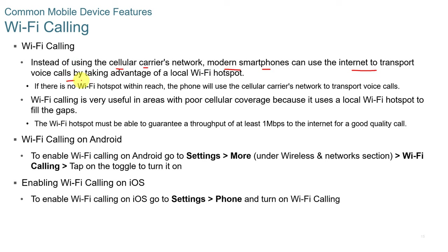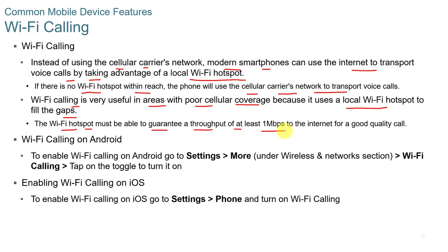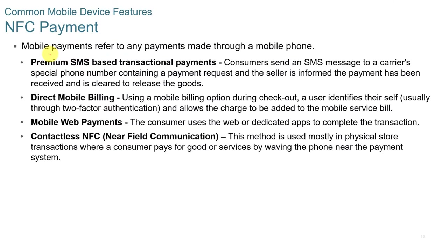Instead of using the cell carrier's network, modern smartphones can use the internet to transport voice calls by taking advantage of local Wi-Fi hotspots — this is called Wi-Fi calling. If there's no Wi-Fi hotspot within reach, the phone will use the cell carrier's network. Wi-Fi calling is useful in areas with poor cell coverage, and the Wi-Fi hotspot must be able to guarantee a throughput of at least one megabyte to the internet for good quality. On Android, go to Settings > More > Wi-Fi Calling. On iOS, go to Settings > Phone > Wi-Fi Calling.